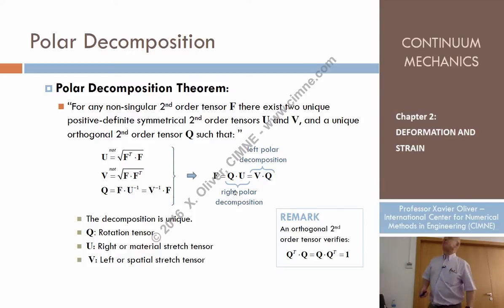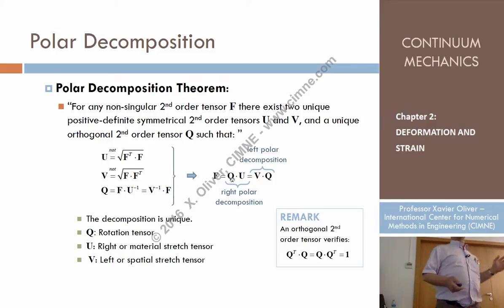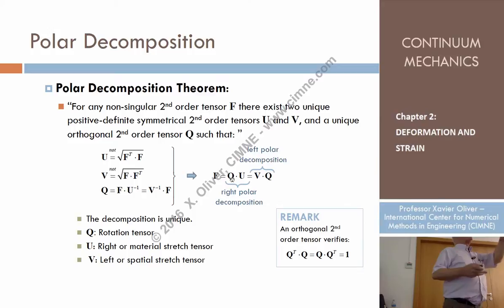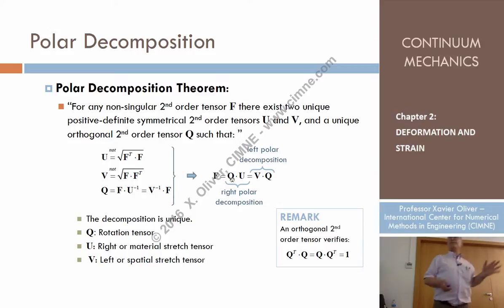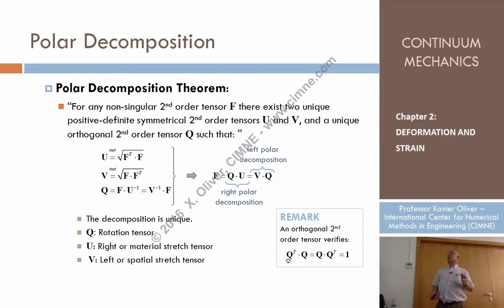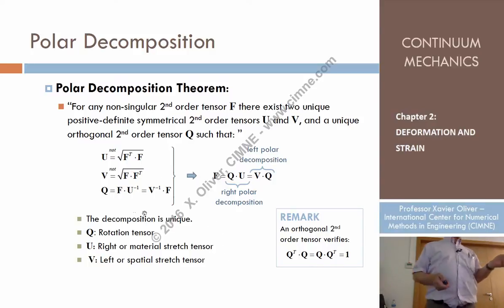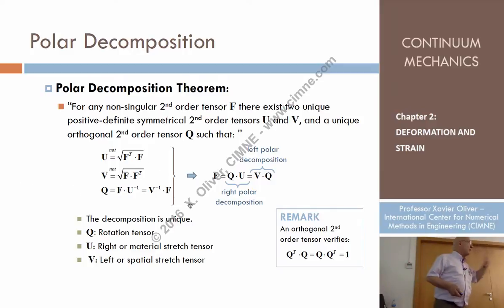So the decomposition involves Q. Q is something that mathematicians would call an orthogonal tensor or an orthogonal matrix. Mathematicians say Q is an orthogonal tensor which has the property that Q transpose times Q is equal to Q times Q transpose, which is equal to unity. In other words, it's a tensor whose inverse is its transpose. That's what is called an orthogonal tensor for a mathematician.